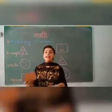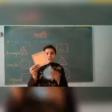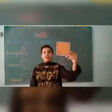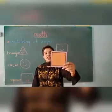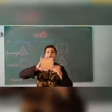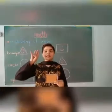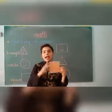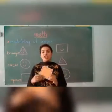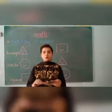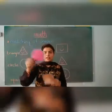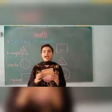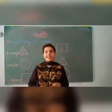Now let's move towards the last basic shape. That is square. Square has four sides and four corners. Very good. Now let's recall it once again — circle, triangle, and square. Well done, kids.